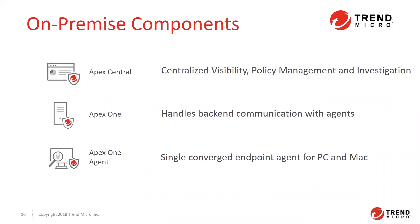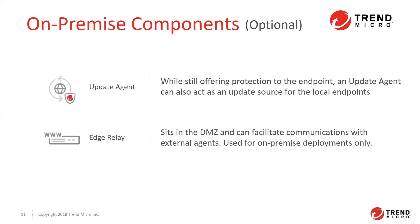Let's talk about the components. If you are deploying or looking to redeploy Apex One, there are three main components: Apex Central for centralized visibility, policy management, and investigation; the Apex One server that handles backend communication with the agents; and the Apex One agent, which is the single converged endpoint agent for both PC and Mac. There are also optional components — the update agent, which still provides protection but can also act as an update source for local endpoints in that network segment, and the edge relay, which can sit in the DMZ to facilitate communication between external agents and the on-premise server.